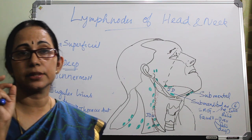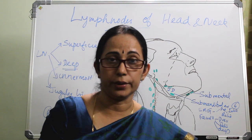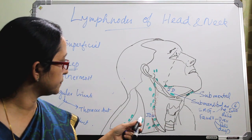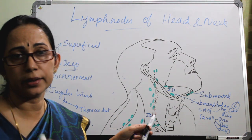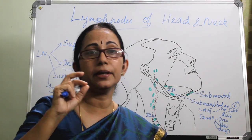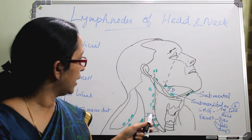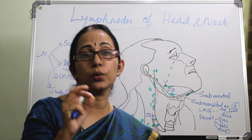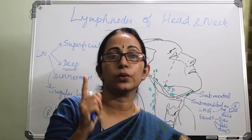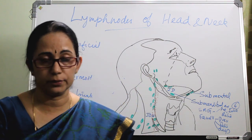The jugulo-omohyoid node is the node of the tongue. It is situated over the omohyoid, at the middle tendon of the omohyoid muscle. So the jugulodigastric node is the node of the tonsil, and the jugulo-omohyoid is the specific node of the tongue.